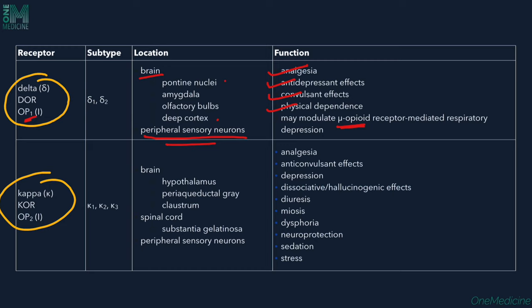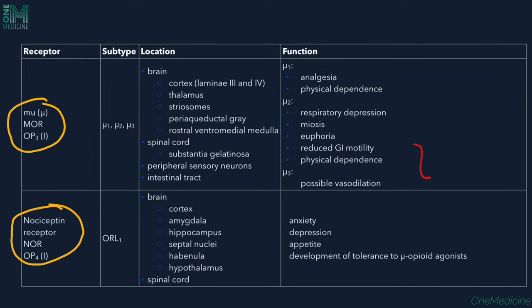The kappa receptor (opioid 2) is present in the hypothalamus, periaqueductal gray matter, claustrum, substantia gelatinosa of the spinal cord, and peripheral sensory neurons. Its actions include analgesia, anticonvulsant effects, depression, dissociation or hallucinogenic effects, diuresis, miosis, dysphoria, neuroprotection, and sedation.